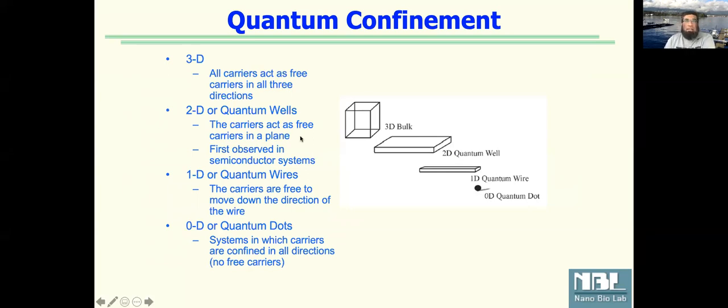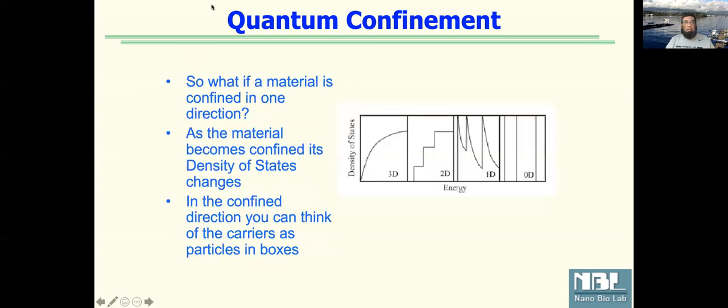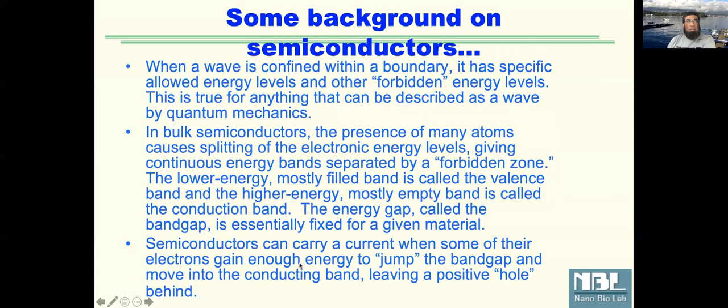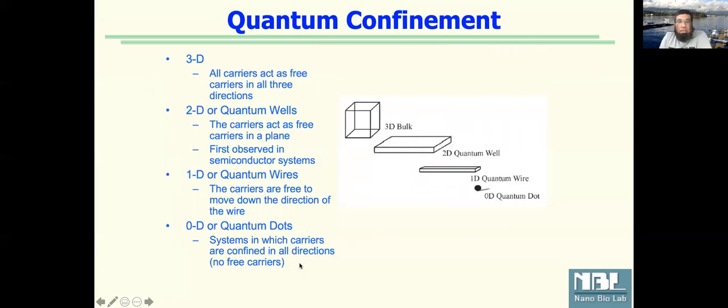Zero dimension, one dimension can be a wire, a long entity. Carbon nanotubes, for example, they're one dimension, they have only length, they don't have width. They have width, but it's almost negligible compared to the whole length.